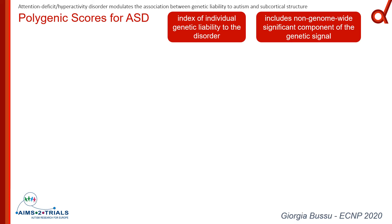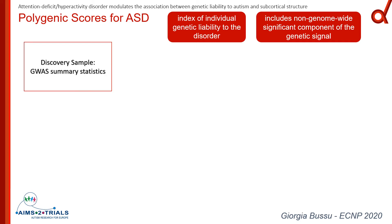Therefore, making computations like polygenic scores is extremely valuable to improve our understanding of the genetic basis of disorders like ASD. Polygenic scores are the sum of re-scaled alleles in a target sample weighted by the estimated effect size as determined in an independent GWAS — the discovery sample. So you start with a discovery sample, a GWAS analysis that has been already performed with the same phenotype, and you get the summary statistics for that analysis.